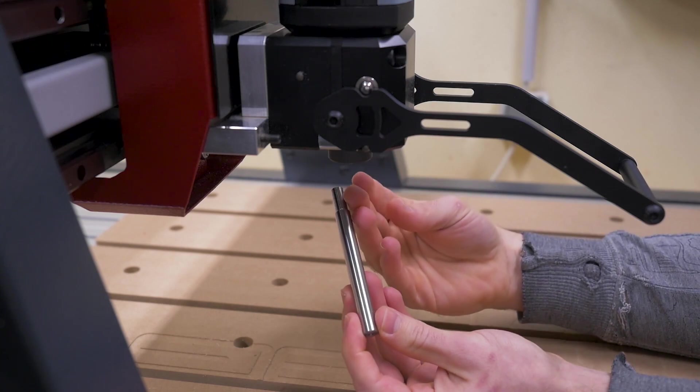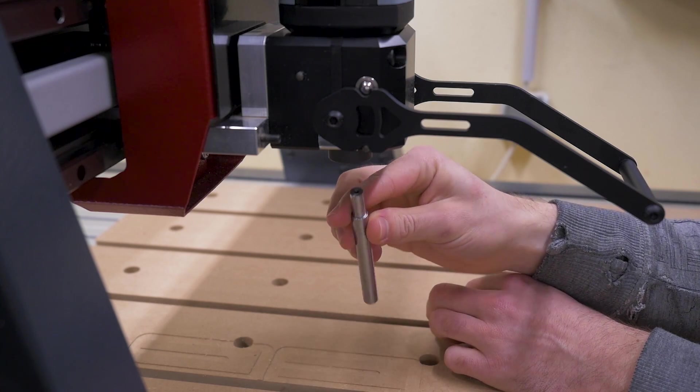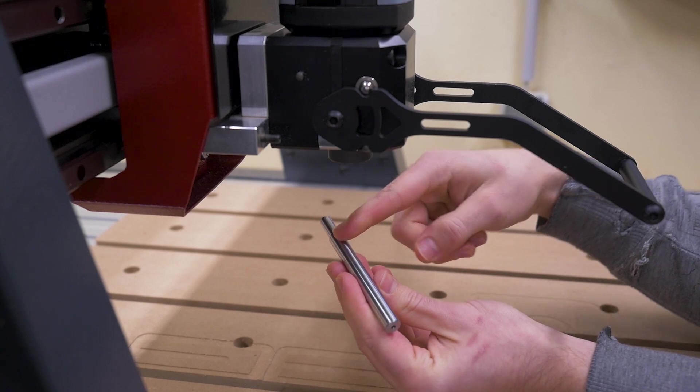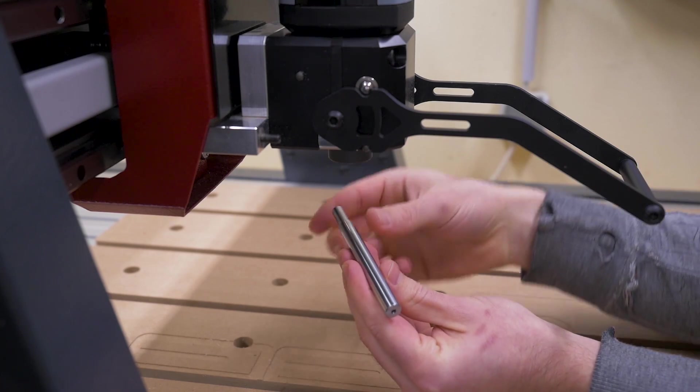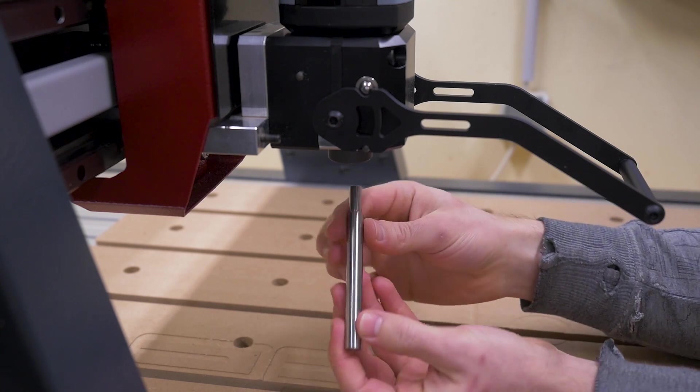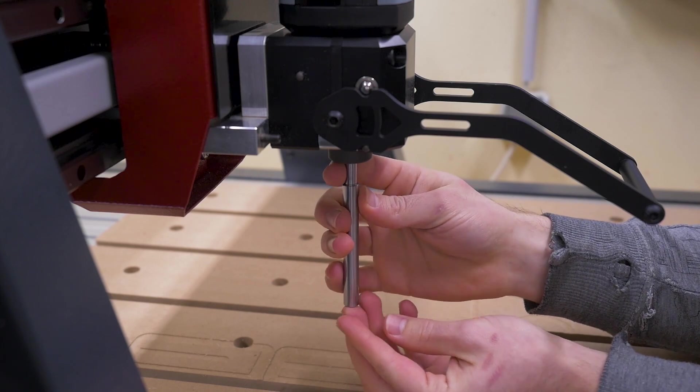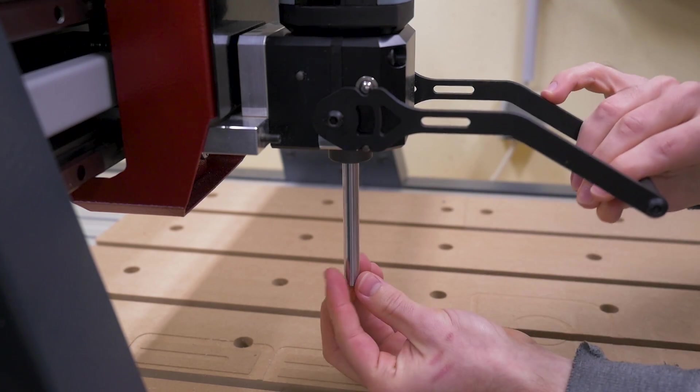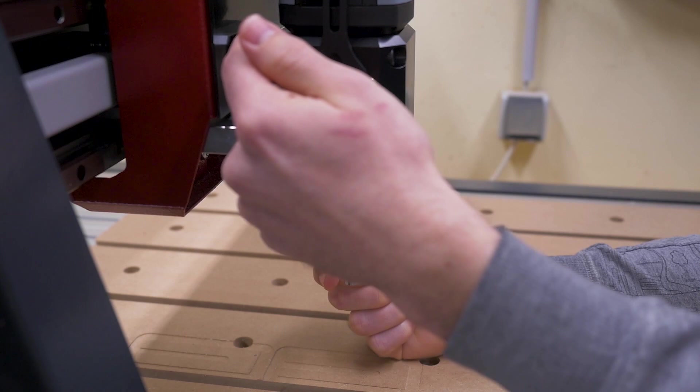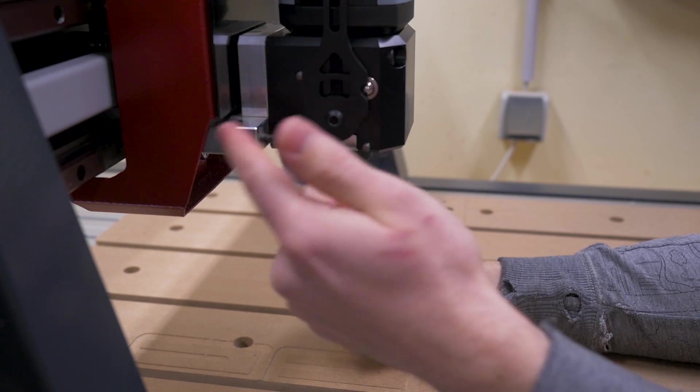The way I'm going to adjust this now is first measuring how much it's off in this and this direction and I'm doing that with this piece of precision ground shaft that a friend made for me. It's perfectly straight and has basically zero runout and it fits into the chuck here and when I know how much it's off I can put shim stock in between the mounting parts.